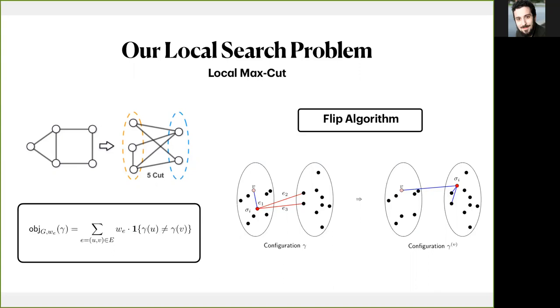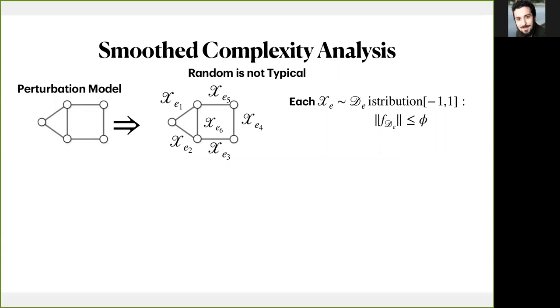So let's try now to specialize the smooth analysis framework to our problem. First of all, it is worthy to mention that we can always normalize the weights to minus one one, since the combinatorial structure of the problem does not change at all. So in this model, given an arbitrary graph, we just sample the weights of the edges from a distribution that has bounded density. Let's call this bound phi.